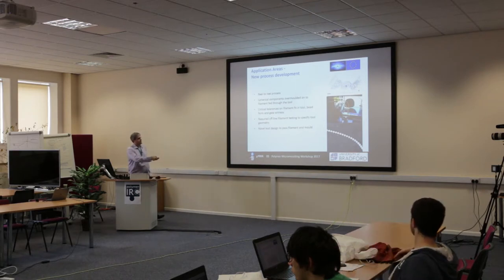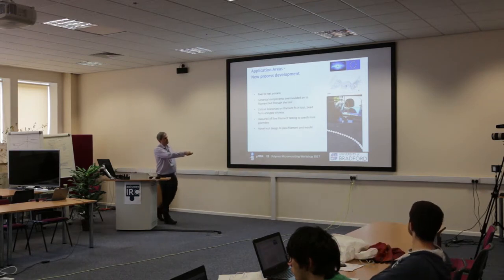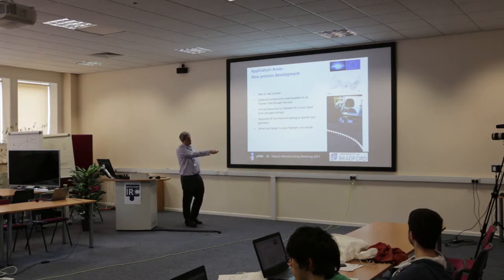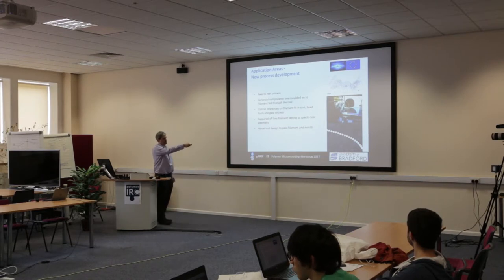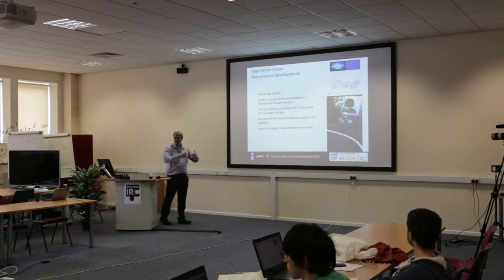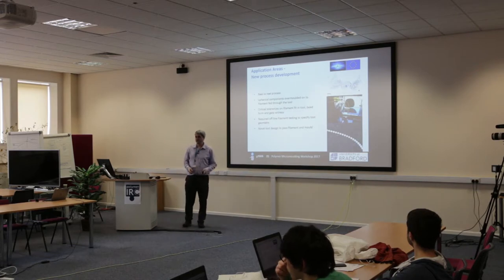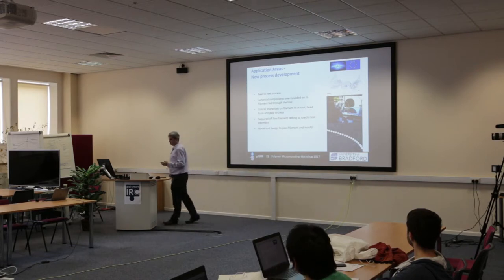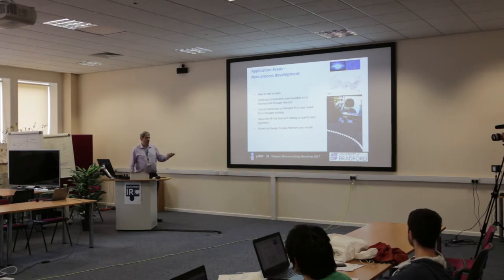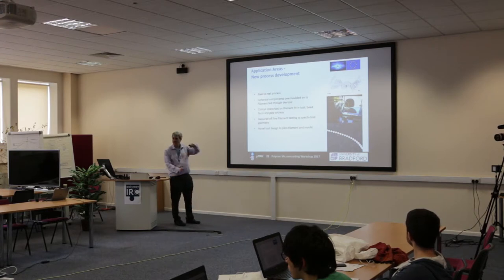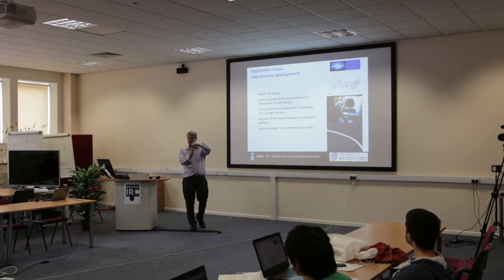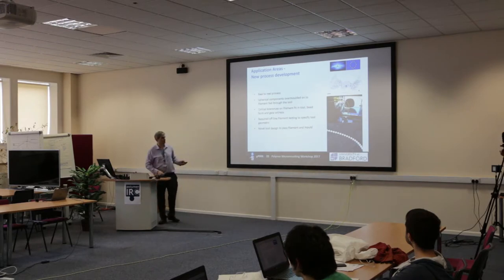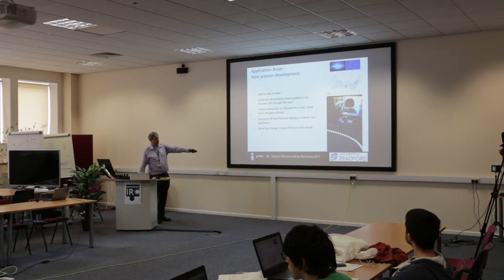We've also looked at reel-to-reel processes — an interesting variant where a filament is passed through the mold and structures are molded onto that filament. In this case we're molding almost spherical beads, four at a time, creating chain-like objects. This requires careful measurement of filament tension and Poisson's ratio to measure the actual filament diameter, allowing us to cut the mold tool to a perfect fit with no flashing between beads.